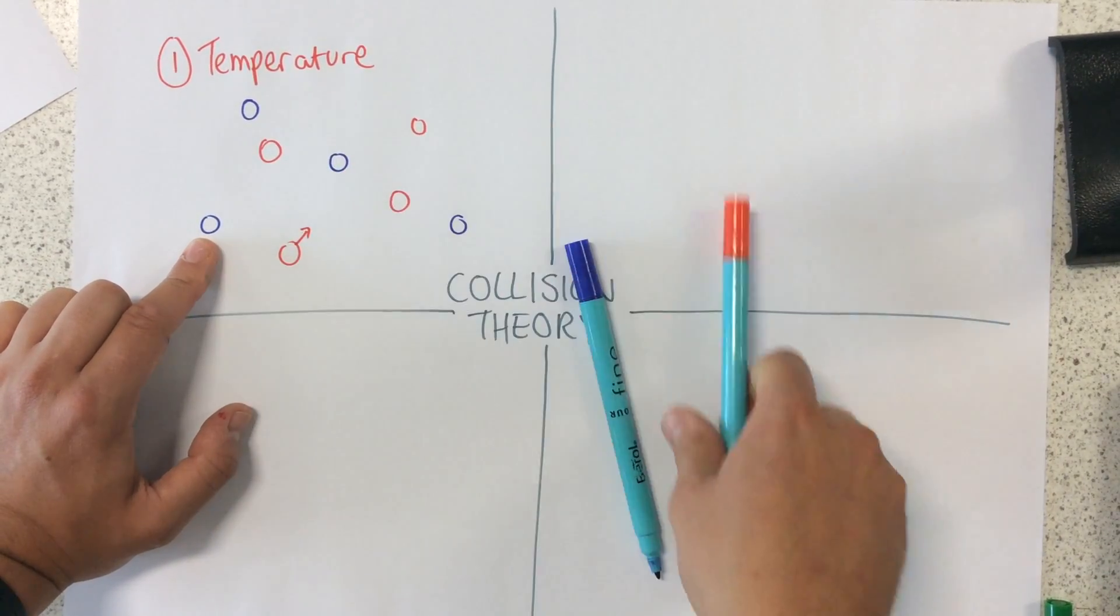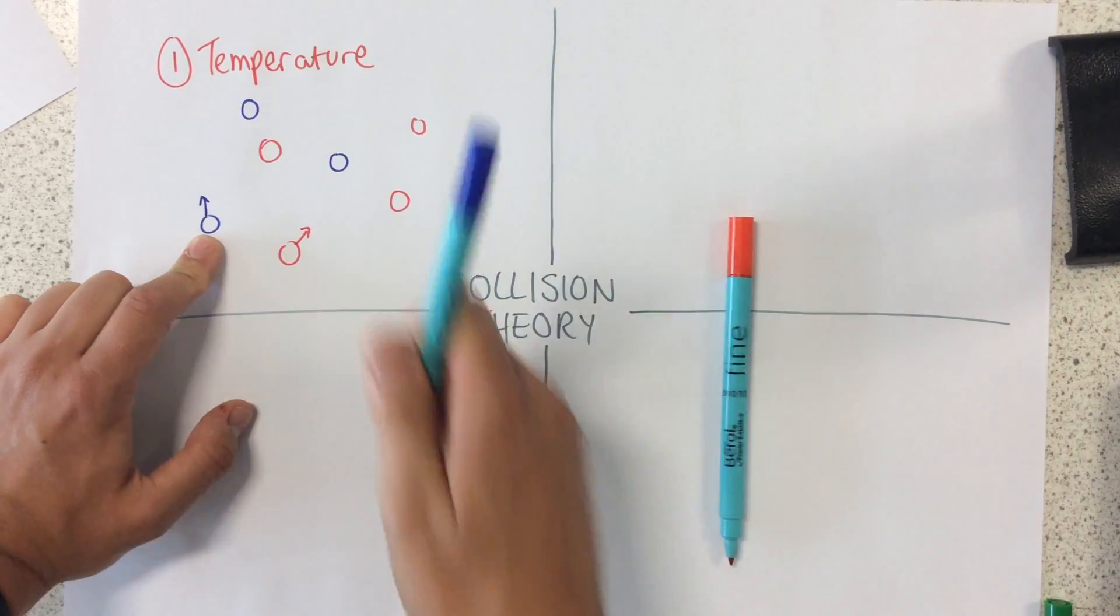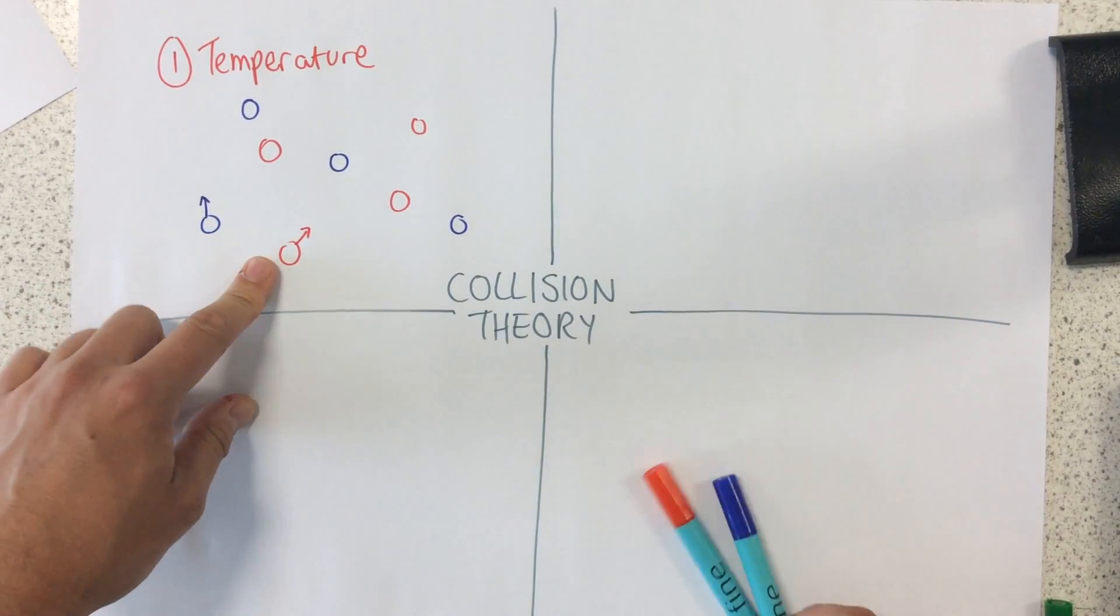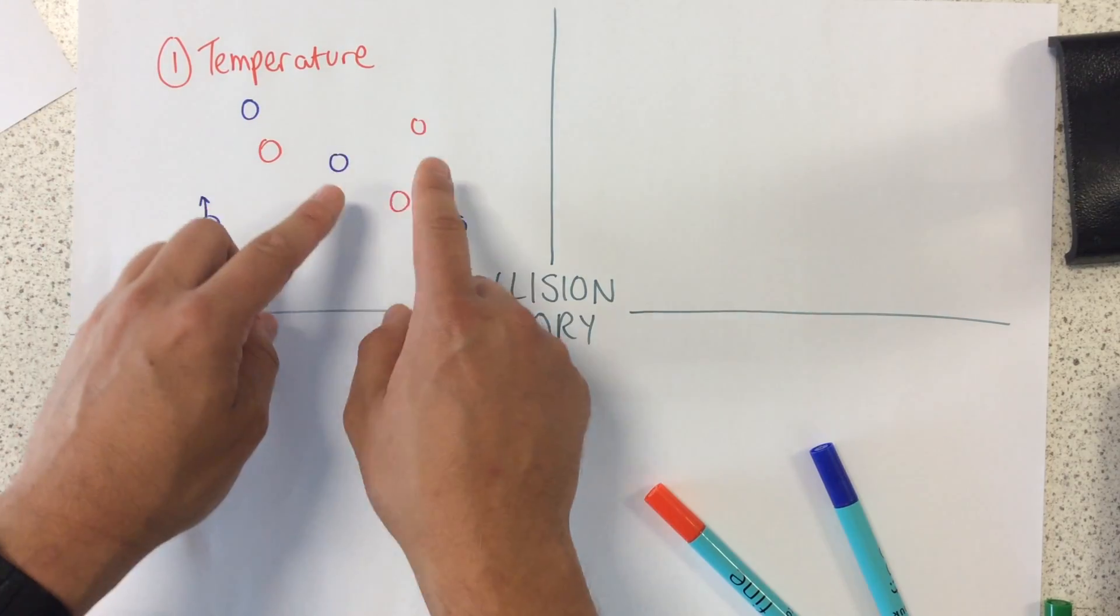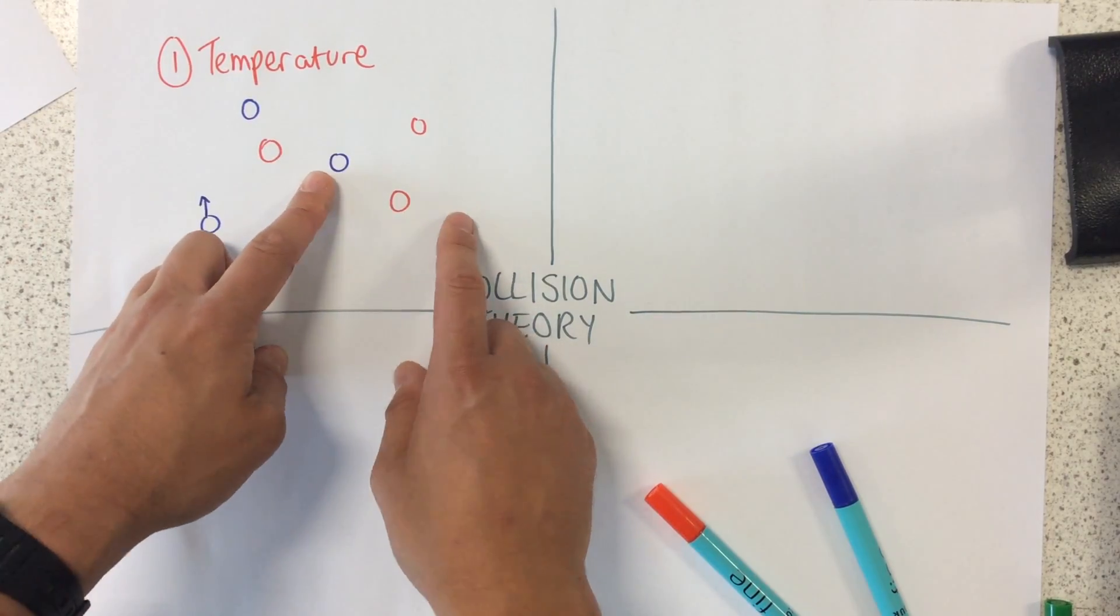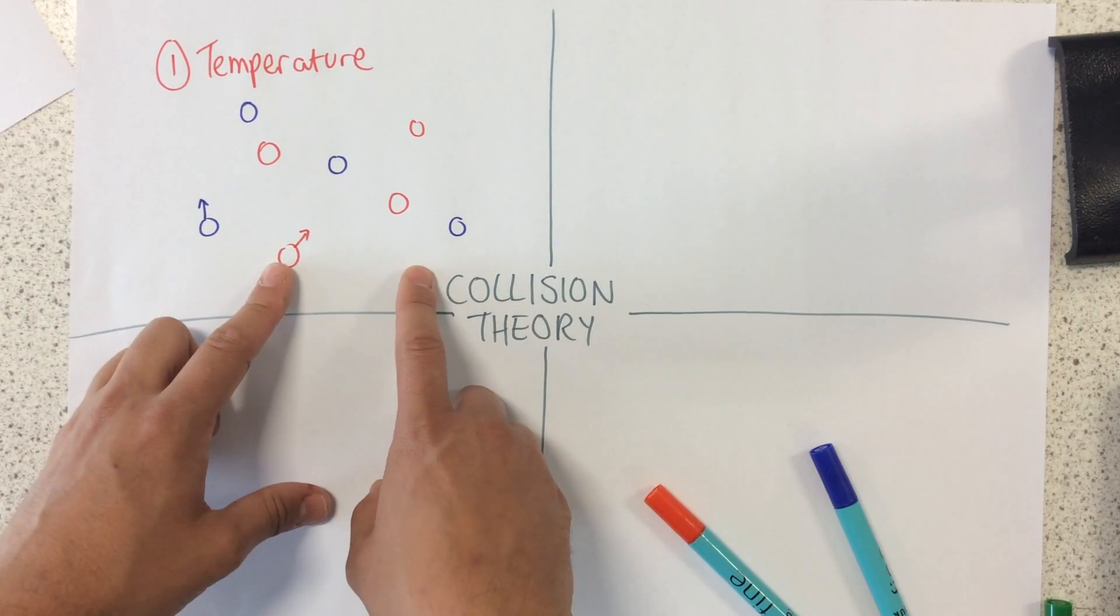These particles are not going to have much kinetic energy, that's movement energy. So they're going to be moving around slowly. This means that their collisions aren't going to be very frequent, so there's a slow rate of reaction.